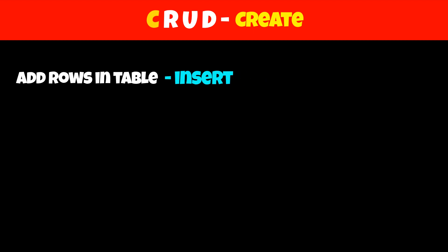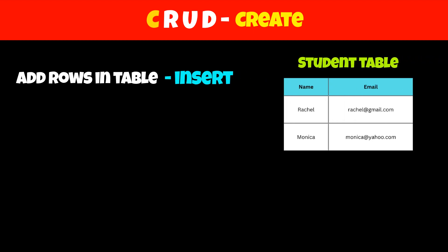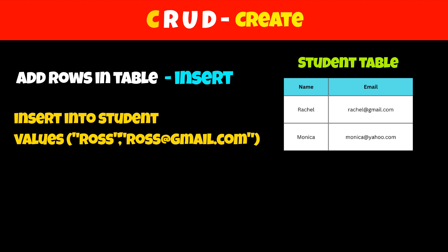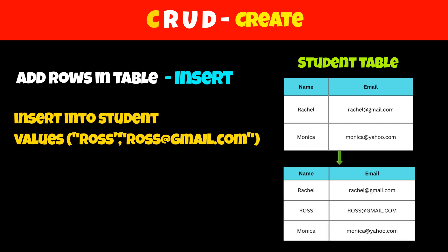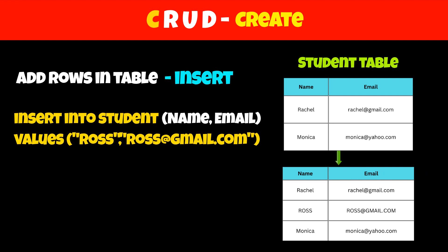The first letter in CRUDE stands for Create, which is used to add new records or rows into the table. To add a new row, we have to use the INSERT command. For example, if we want to create a record for ROS in the student table, then we can use: INSERT INTO student VALUES, then in parentheses with the values. We can also mention column names after the name of the table, but it's optional.